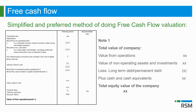To summarise the calculation: to get to the total equity value of the company, you take the value of the operations, add the value of any non-operating assets and investments, deduct long-term or permanent debt, add any excess cash and cash equivalents, and that gives you the total equity value of the company.